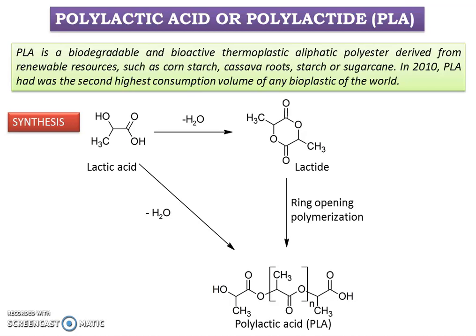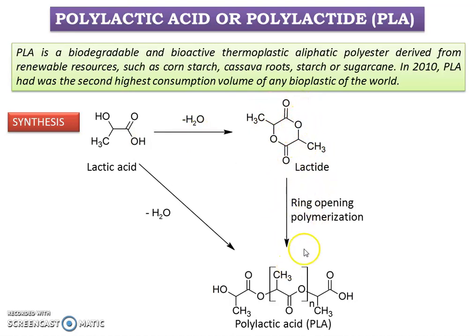How do you synthesize polylactic acid? The synthetic procedure is shown here. We take lactic acid and subject it to condensation to get lactide, and then ring-opening polymerization of lactide gives us polylactic acid.